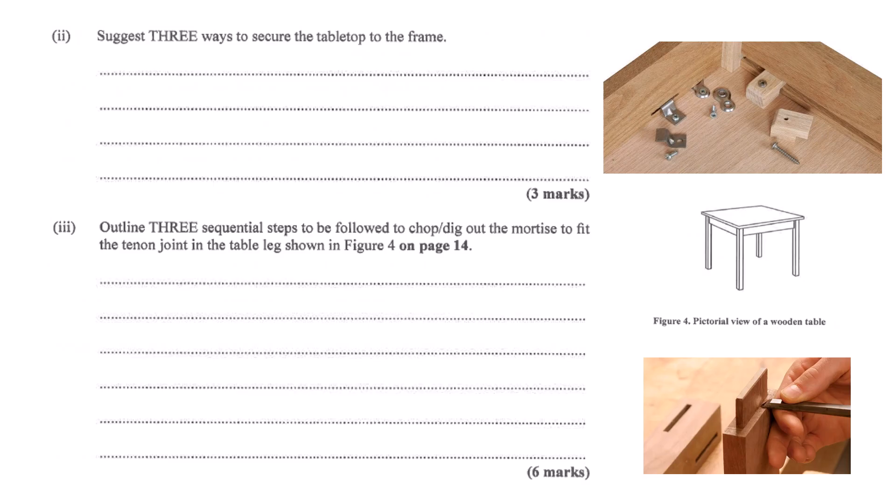So these fasteners - they're often little figure-eight shaped metal clips or sometimes Z-shaped clips. They screw to the frame and fit into a groove or slot on the underside of the tabletop. They hold the top down securely but allow it to slide sideways just a tiny bit as it expands or contracts. It accommodates that natural wood movement. That's actually really smart, preventing cracks just by letting it move a bit. Crucial for longevity, especially with solid wood.